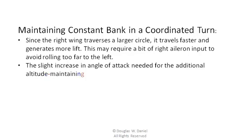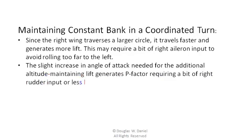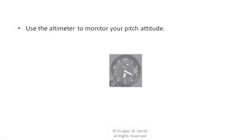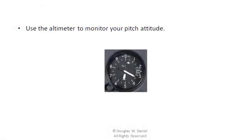The constant increase in angle of bank needed for the additional altitude-maintaining lift generates P-factor, requiring a bit of right rudder input or left rudder. Use the artificial horizon, also known as the attitude indicator, to monitor your angle of bank. Use the altimeter to monitor your pitch attitude.